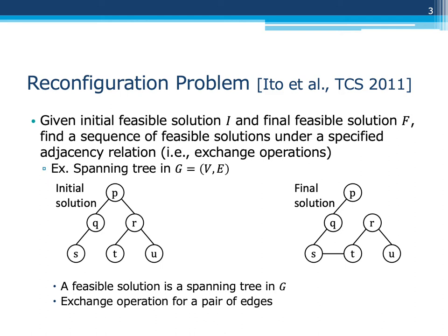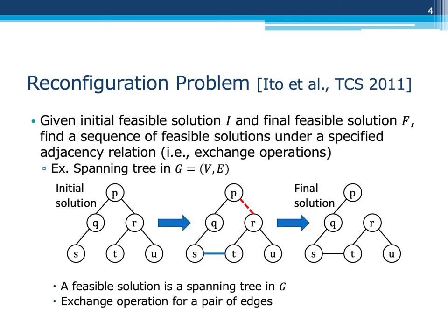For example, consider a spanning tree in graph G. A feasible solution is a spanning tree in G, and the adjacency relation specifies an exchange operation in each transformation step. In this example, we consider an exchange operation for a pair of edges.